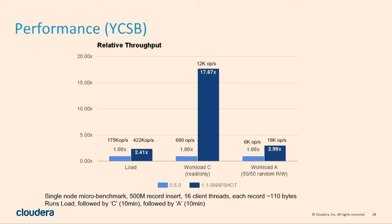Here's one graph I wanted to highlight comparing Kudu 0.5, our first public release, to Kudu 1.1. It's actually gotten even better since then — I didn't have time to rerun the benchmarks. But you can see pretty substantial improvements, like 17x on one of these workloads, and 2.4 to 3x on others. They're still pretty good numbers — if something is three times faster than it used to be, that's a pretty big improvement.